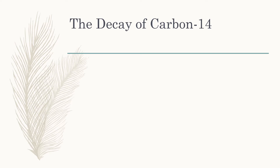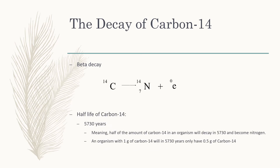Carbon-14 undergoes beta decay. It outputs nitrogen, which has one more proton, while also releasing an electron. The half-life of carbon-14 was found to be 5,730 years, meaning half of the amount of carbon-14 in an organism will decay in that time and become nitrogen.